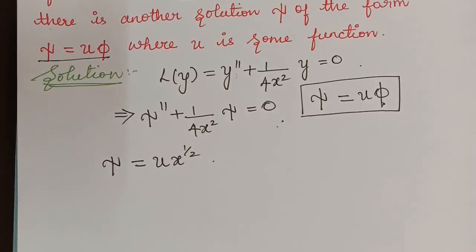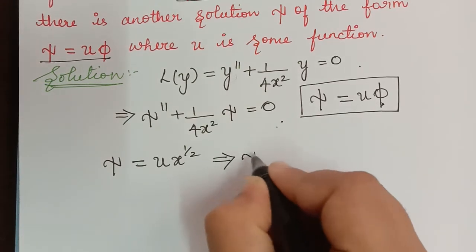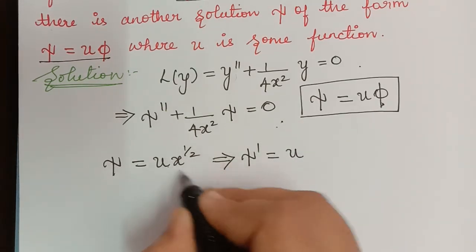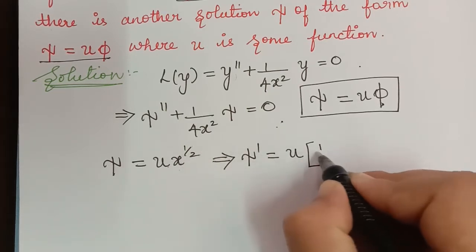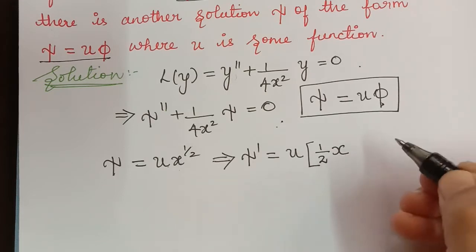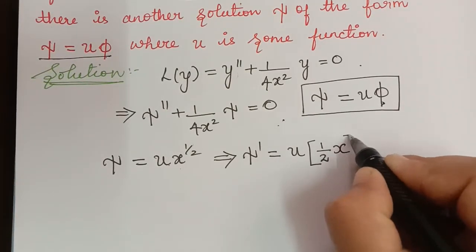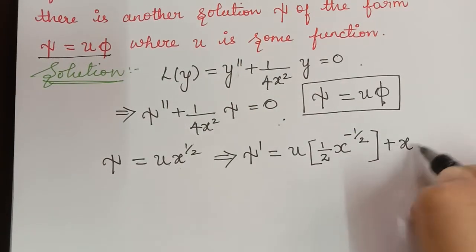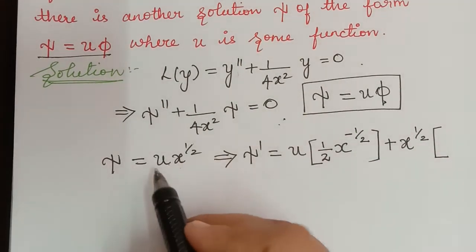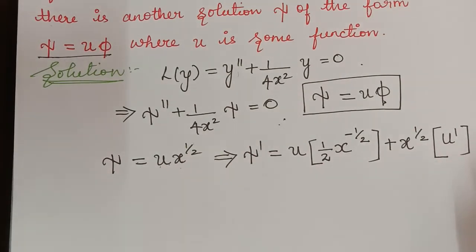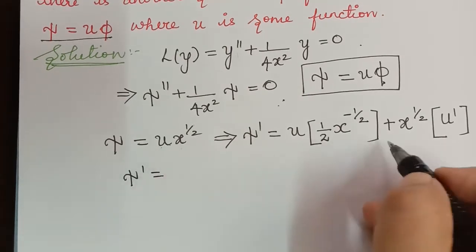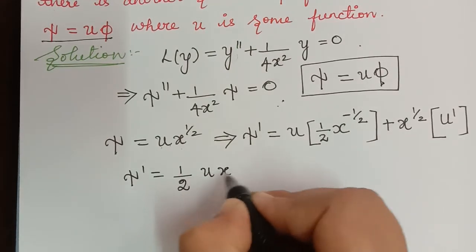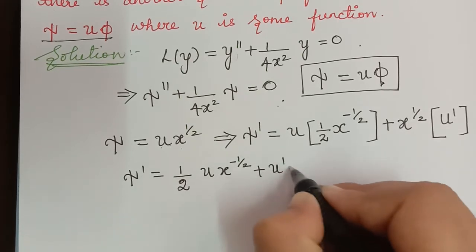First, let us find ξ'. Using the product rule (uv method): ξ' = u · (1/2)x^(1/2 − 1) + x^(1/2) · u'. The derivative of x^(1/2) is (1/2)x^(−1/2). So simplifying, ξ' = (1/2)u · x^(−1/2) + u' · x^(1/2).